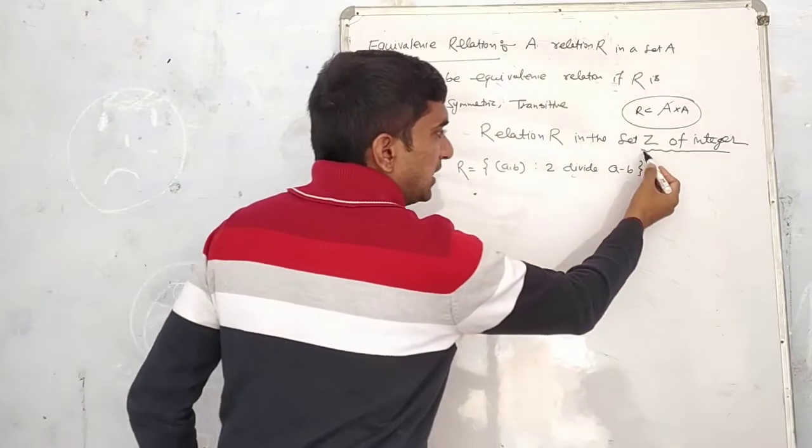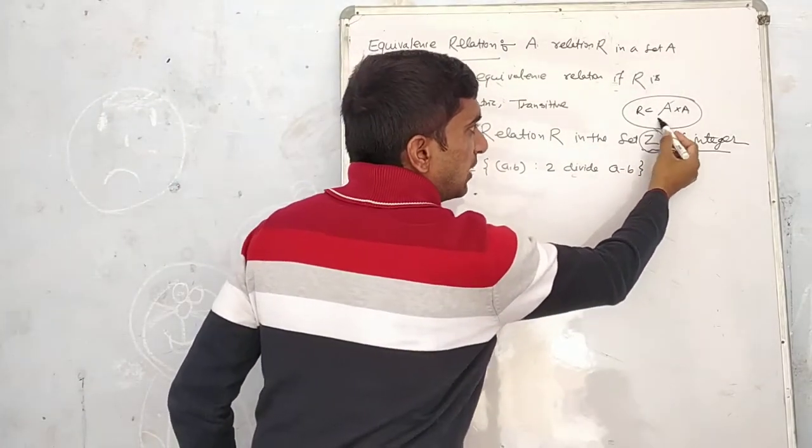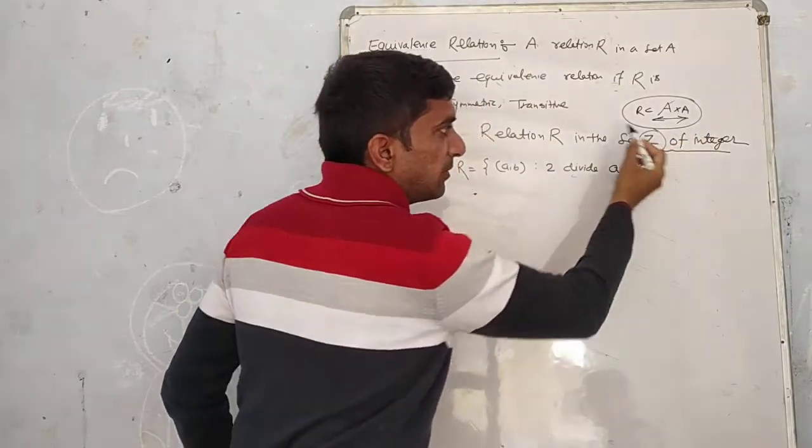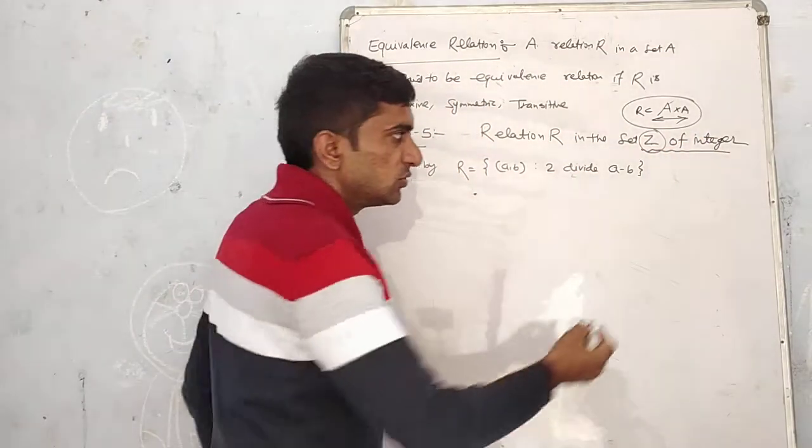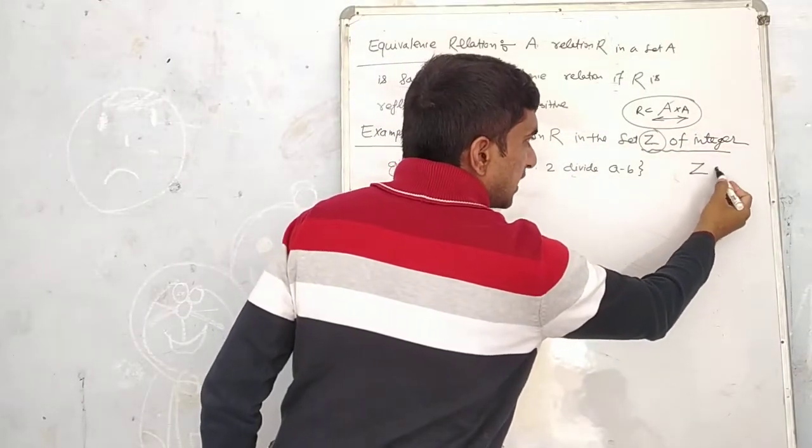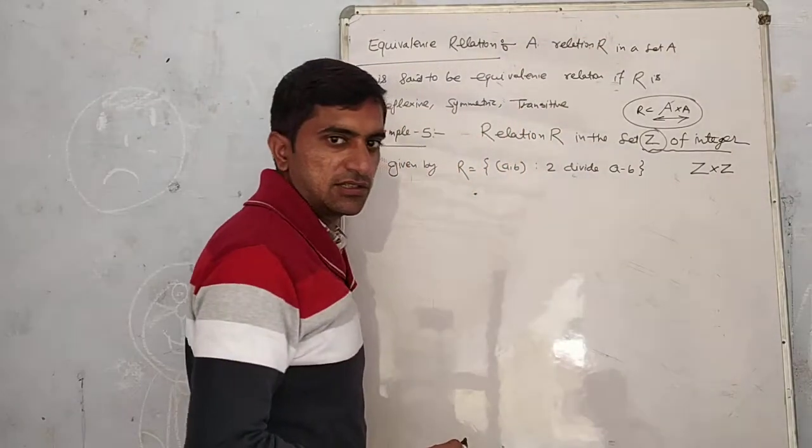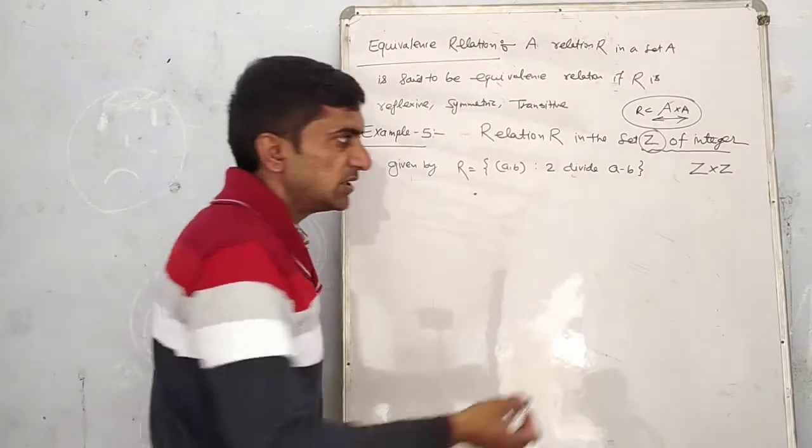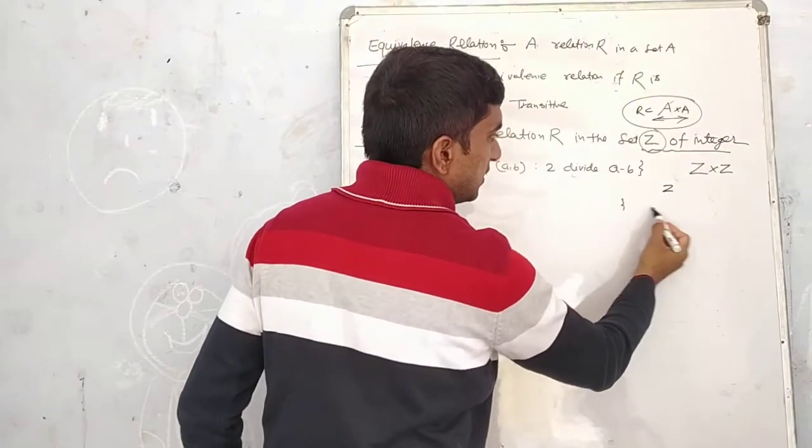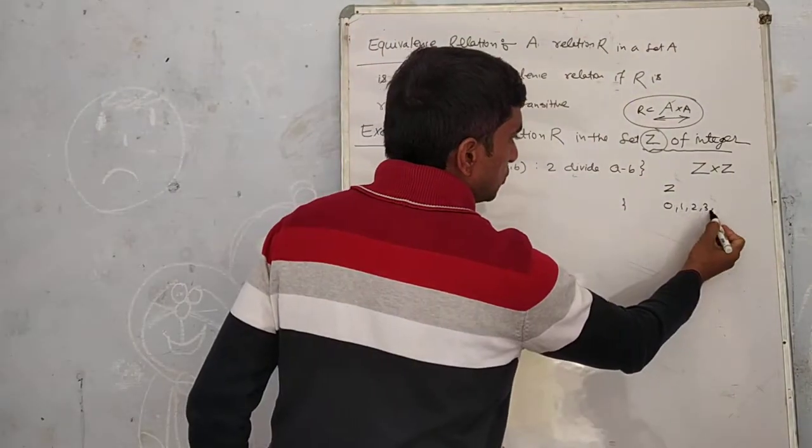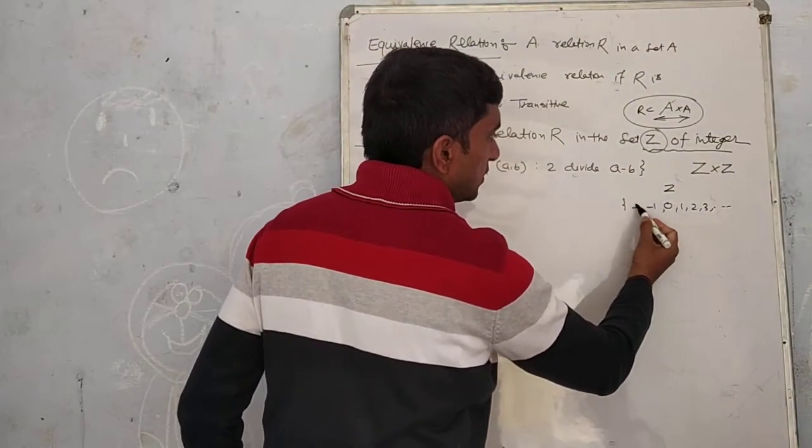If we have set A into A and A, what do we need to do with the relationship? We need to check Z cross Z. Z is a very big set. What happens in Z? We have 0, 1, 2, 3, and minus 1, minus 2.